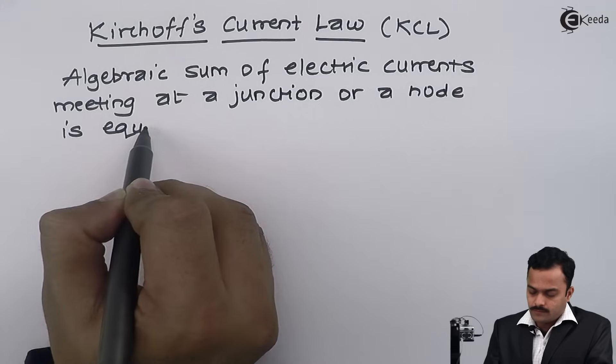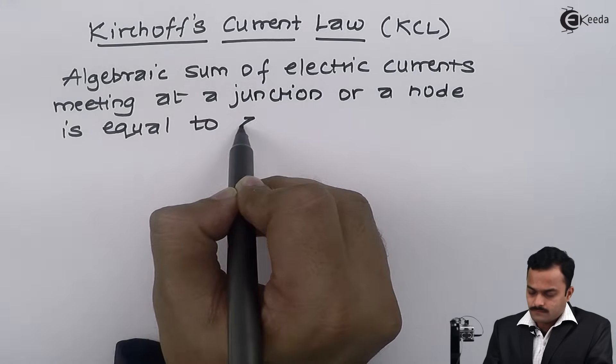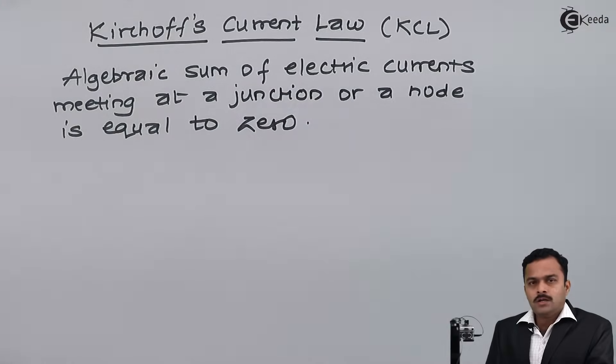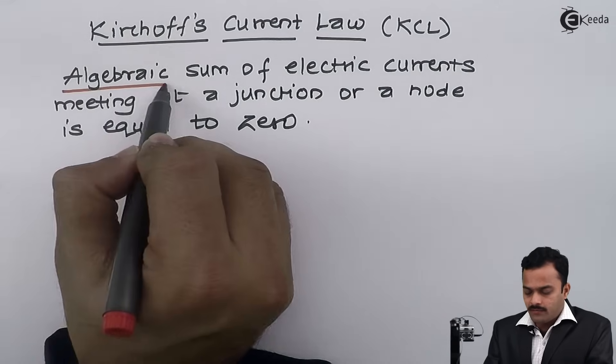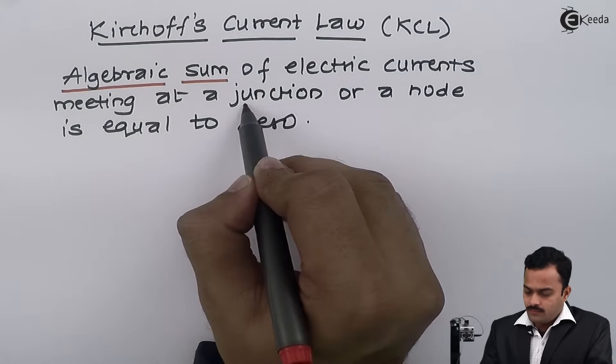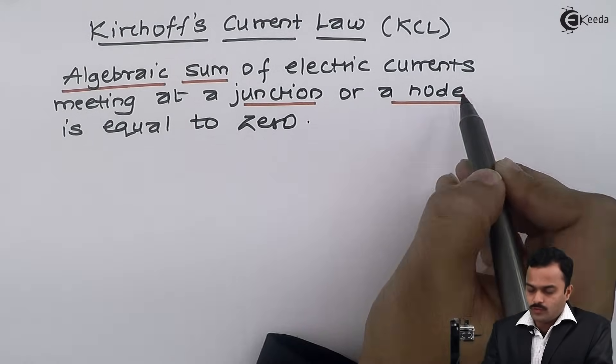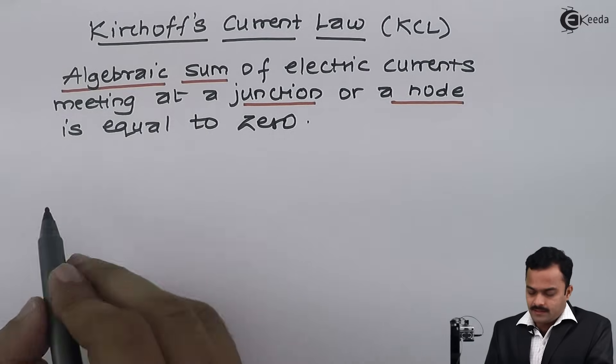In this statement, two things need to be clear. One: what is the meaning of algebraic sum? And second: what is the meaning of junction or node?